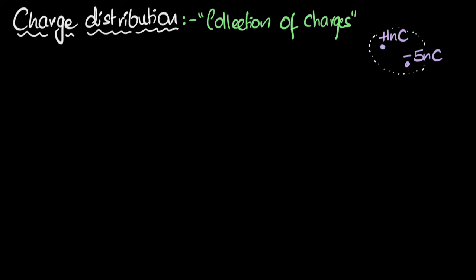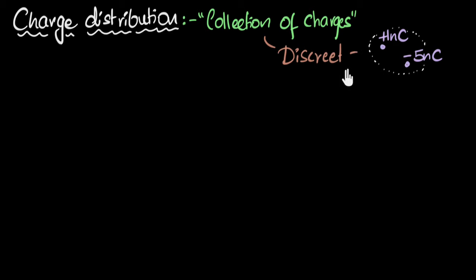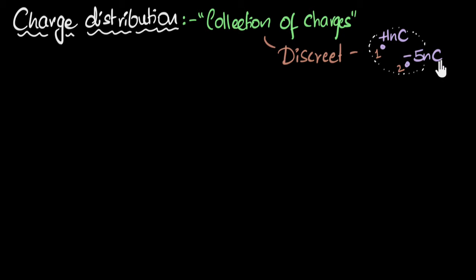This particular kind of charge distribution is called discrete charge distribution. What that means is you can count and say there is one charge over here and another charge over here, and there are no charges in between. When you can count and you have such point charges, we call that collection a discrete charge distribution.